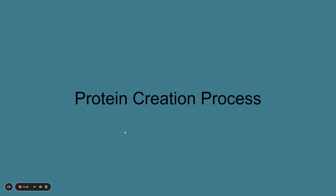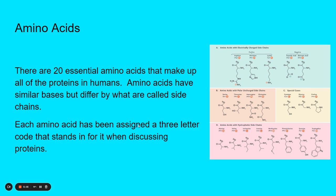So let's talk a little bit about the protein creation process and how that all works. The first thing you need to know is that proteins are made of amino acids. There are 20 essential amino acids that make up all the proteins in humans, and amino acids have similar bases but differ by what are called side chains. As you can see in this chart, all the different side chains of amino acids — the OH, double bonded O, NH2 — are present in all of them in some form. Whatever's on this extra bit is called the side chain, and it's this extra stuff that makes it a different amino acid.